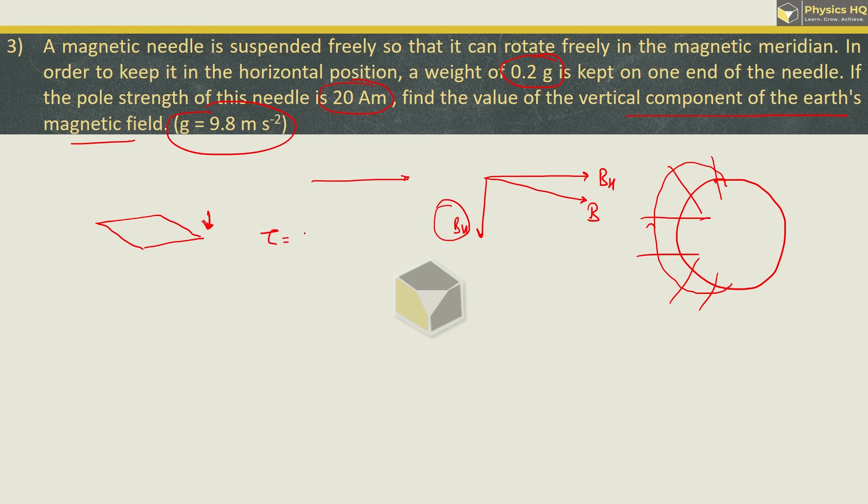Now, this vertical component is trying to push this needle downwards. What is the torque formula? M into B into sin theta. Now, the magnetic moment is horizontal, it is a vertical field. So, the angle is 90 degrees.